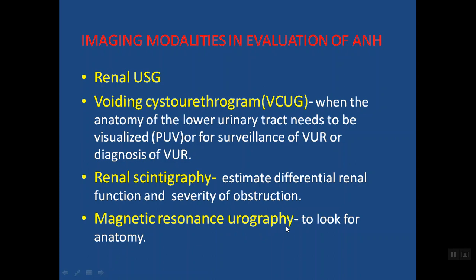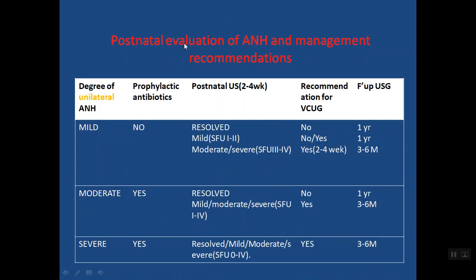Different imaging modalities in evaluation of ANH: the most commonly used is renal ultrasound — it is inexpensive, no radiation, no contrast administration. The second is voiding cystourethrogram (VCUG) when suspecting lower urinary tract pathology like posterior urethral valves, vesicoureteric reflux, bladder diverticulum, or ureterocele. Renal scintigraphy uses radioactive substances like DMSA and DTPA to estimate differential renal function and severity of obstruction, done at six weeks when the kidney is mature. MR urography is used when anatomy is unclear on other investigations.